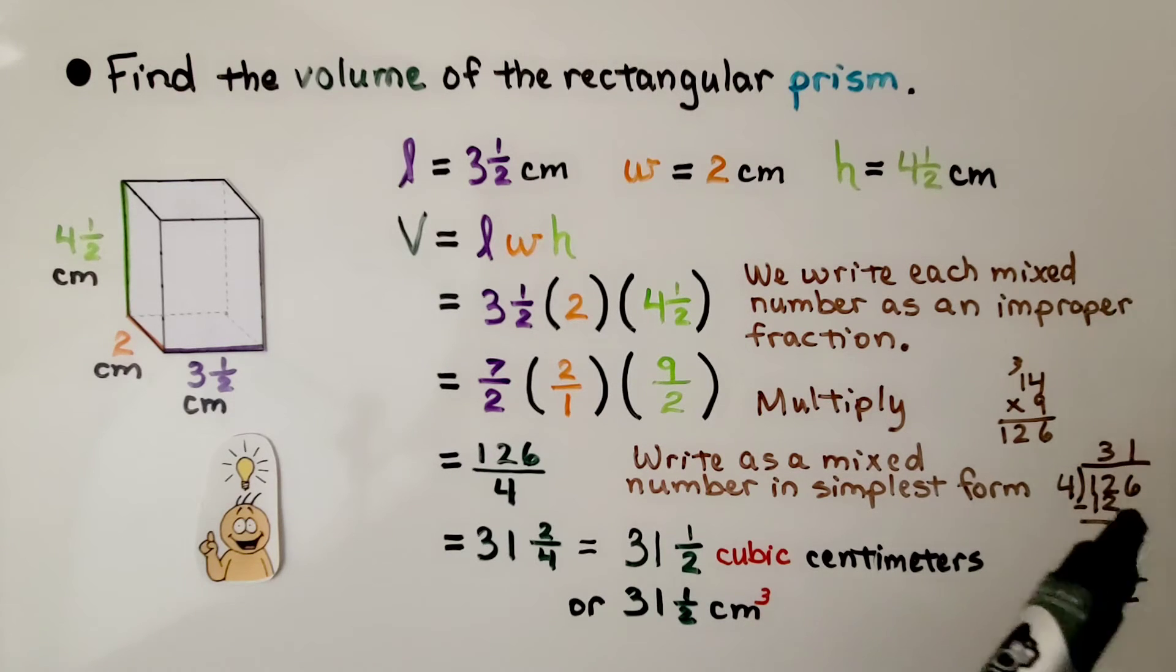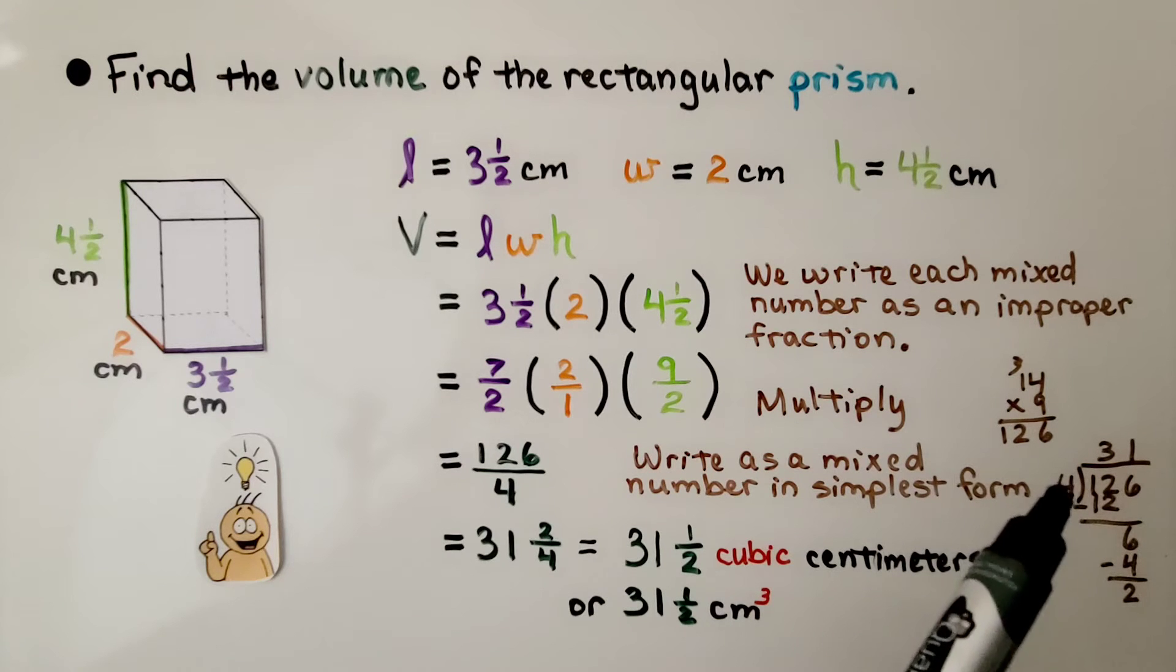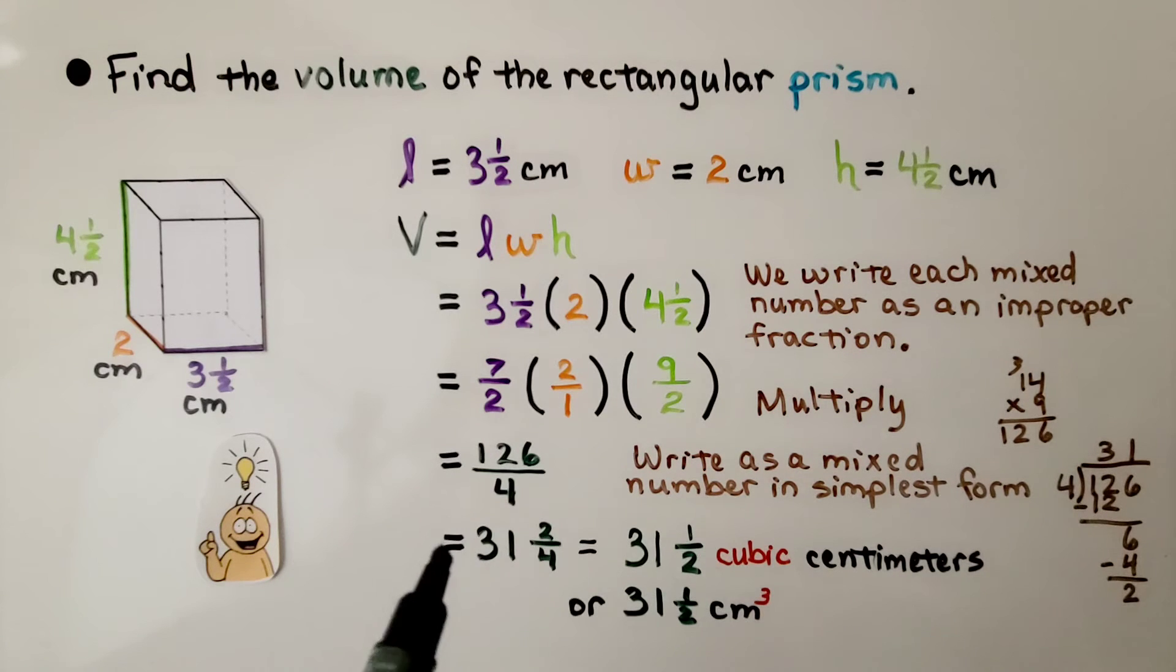We have a two remainder. That's going to be the numerator, and that four divisor is going to be the denominator. So we have thirty-one and two-fourths.